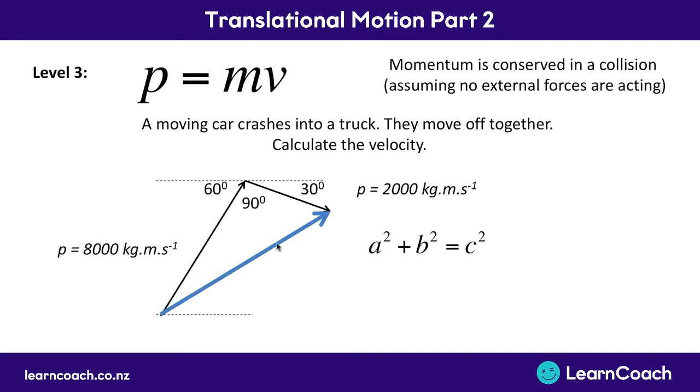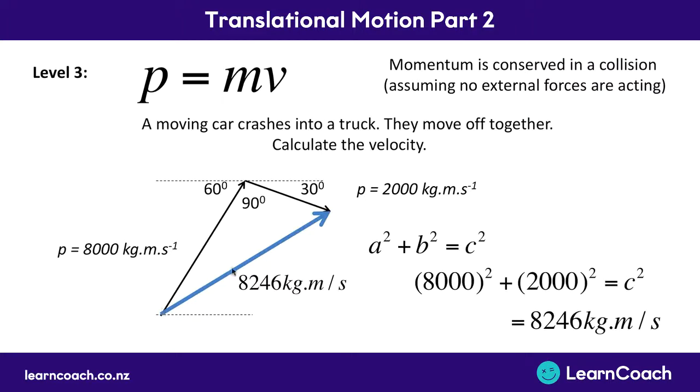So calculating this then for this specific example, we've got a squared plus b squared equals c squared. You plug that into your formula, you're going to get a final length here of 8,246 kilogram meters per second for your momentum.